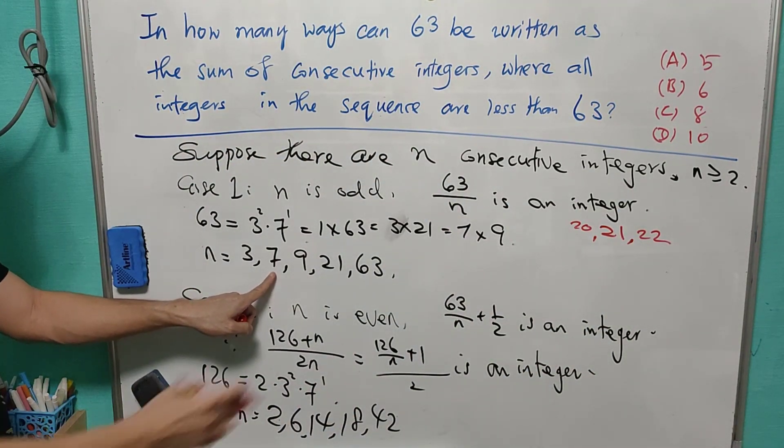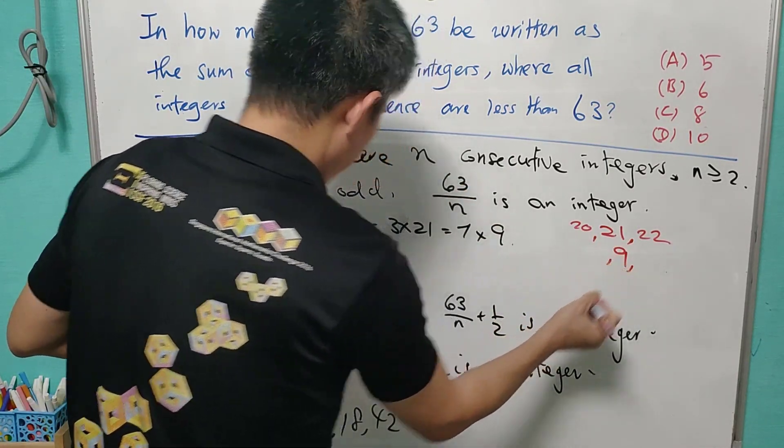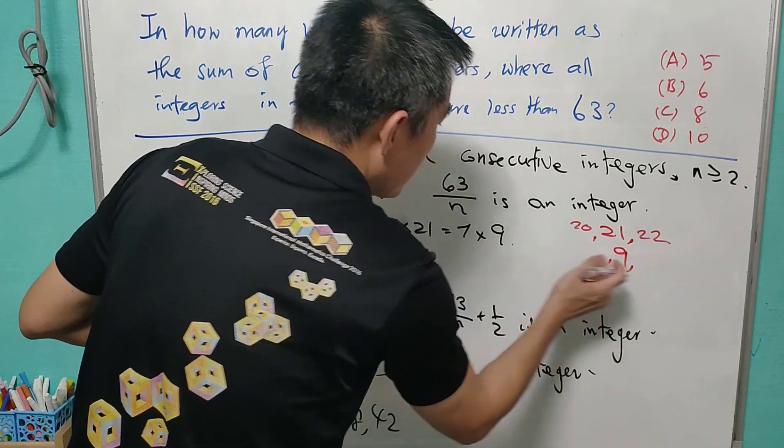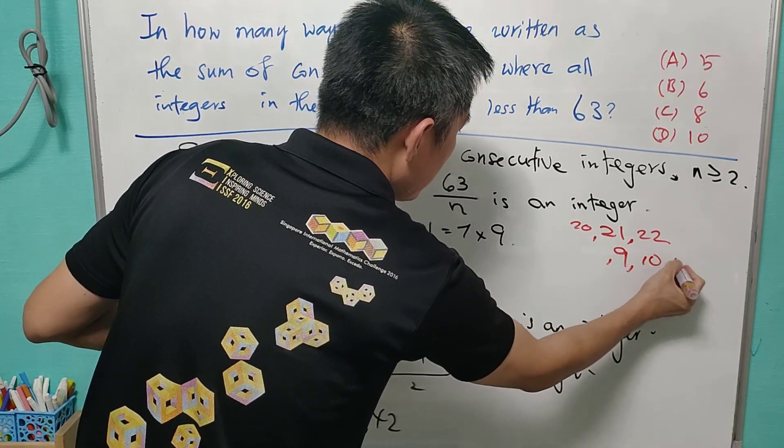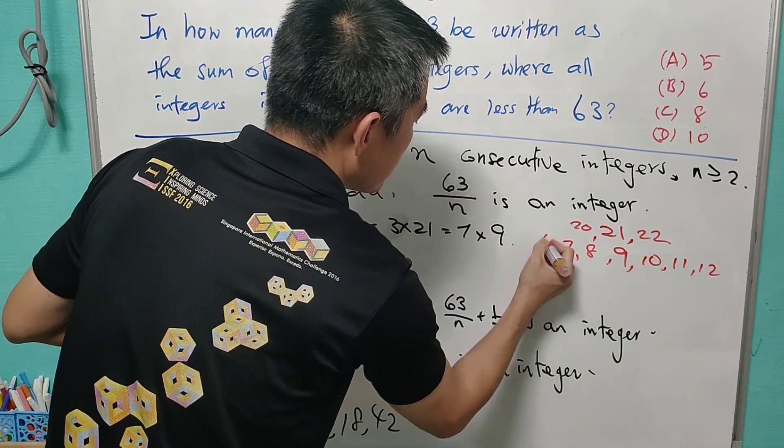For n equals to 7, this is 9. Then we have 3 here and 3 there. That is 10, 11, 12, 8, 7, 6.